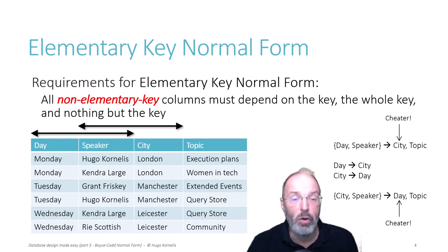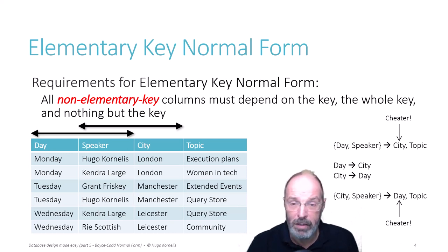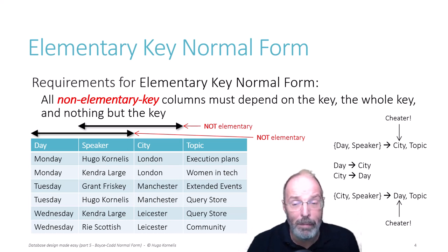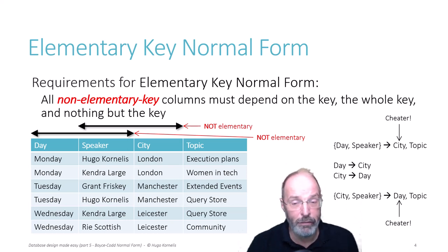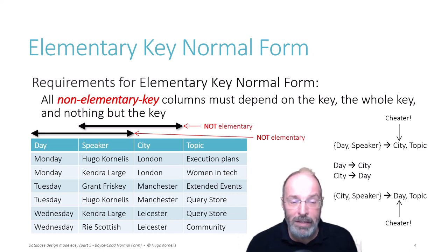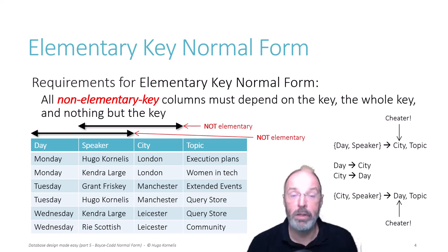We are now talking about elementary key normal form. What we want to know is: do all the non-elementary key columns depend on the key, the whole key, and nothing but the key? That means we first need to determine which keys are elementary and which are not. Both keys are not elementary. Why not? Because both of them implement at least one cheater functional dependency. The key on day and speaker implements the cheater that day and speaker determines the city. The key on city and speaker implements the cheater that it determines the day. So both are not elementary keys, meaning none of the columns in this table is part of an elementary key, and all of them must depend on the key, the whole key, and nothing but the key.